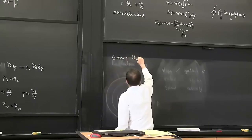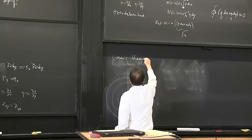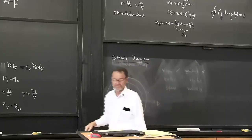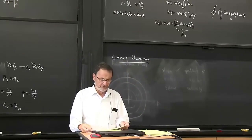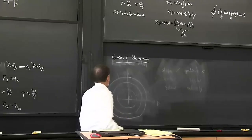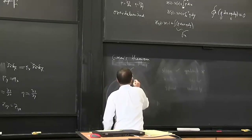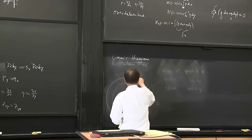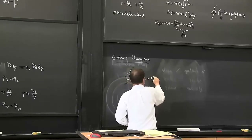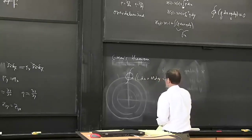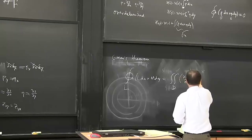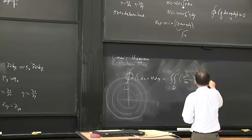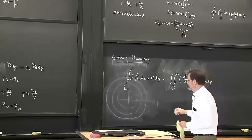Actually, we can get there a more elegant way which is handy because we'll use this again later. Like many important theorems, this one has many names - it's attributed to Gauss, and it's a special case of more general theorems used in fluid dynamics. What it does is relate a contour integral to an area integral.